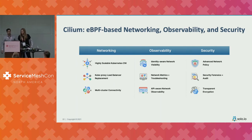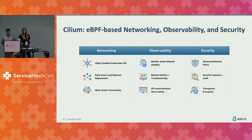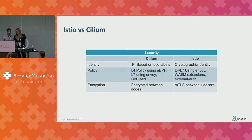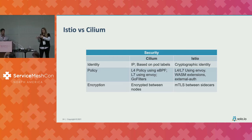Looking at Cilium, you can see there's some similarity between what it does and what a service mesh does — networking, observability, and security — which is exactly what you'd take from the Istio website. So are they competing or complementary? That's basically what we wanted to find out. We did this research — Istio versus Cilium — and looked at those three sections to understand where it makes sense to use one, where to use the other, and where they should collaborate.